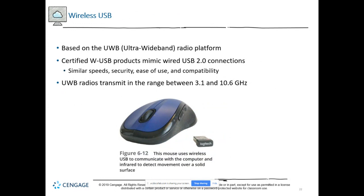Wireless USB is based on ultra-wideband, which connects like wired USB 2.0 connections. Ultra-wideband radios transmit between 3.1 and 5.6 gigahertz. A good example of a wireless USB connection would be a wireless mouse. It uses frequencies set up and designed for this ultra-wideband, just like any other wireless technology.